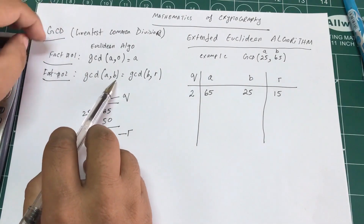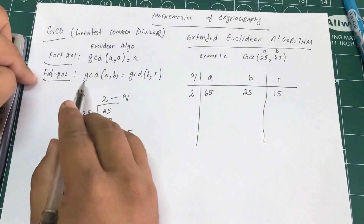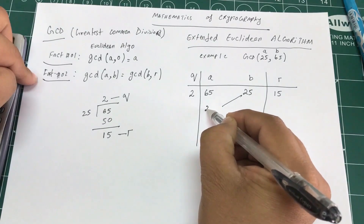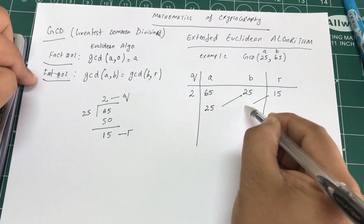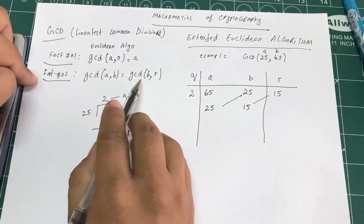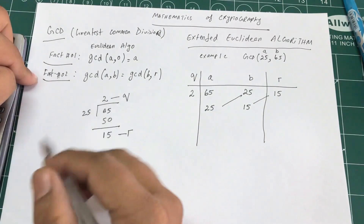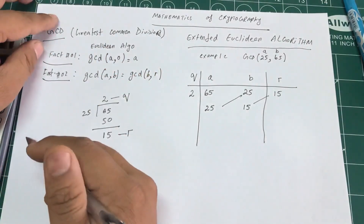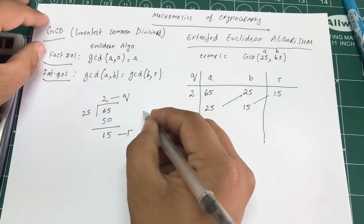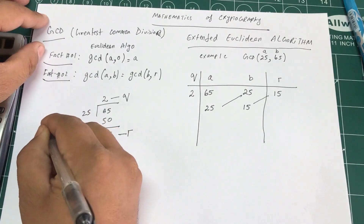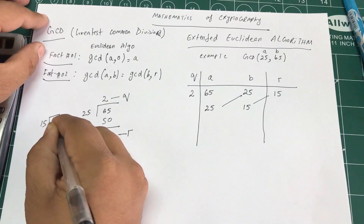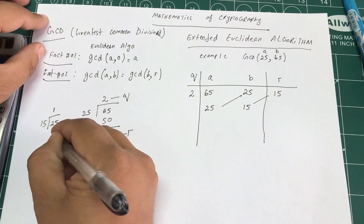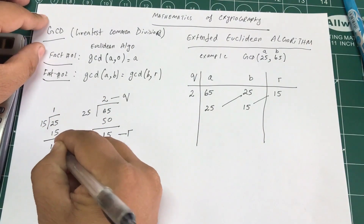Using fact number 2, we bring B = 25 down as the new A and R = 15 down as the new B. Now dividing 25 by 15: 15 times 1 is 15, so the remainder is 10. The quotient is 1 and the remainder is 10.